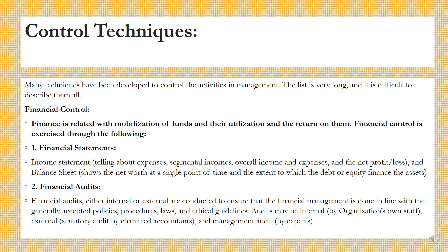Certain control techniques. The first ones are financial controls. Finance is related to mobilization of funds, their utilization and return on them. Financial control is exercised through financial statements: income statement, balance sheet, profit and loss account, and statement of changes in financial position. The income statement tells about expenses, incomes and net profit and loss. The balance sheet shows the net worth at a single point in time and the extent to which debt or equity finances the assets. Financial audits — either internal or external — are conducted to ensure that financial management is done in line with generally accepted policies, procedures, laws and ethical guidelines. Audits may be internal by the organization's own staff or external statutory audits by chartered accountants, and there are management audits done by experts.